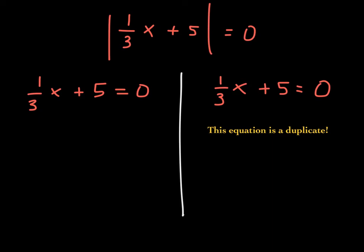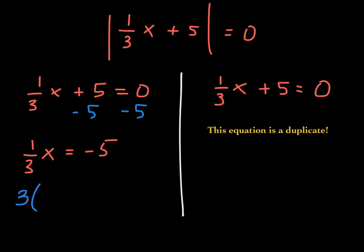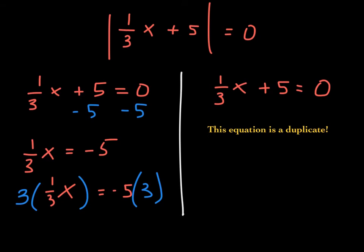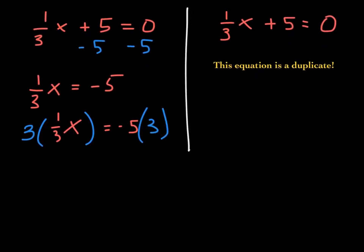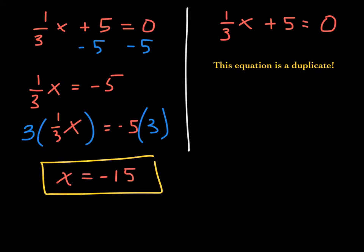Subtracting 5 from both sides gives 1/3 x equals negative 5. Multiplying both sides by the reciprocal of 1/3, which is 3, isolates x. The left side becomes simply x, and the right side gives x equals negative 15. That is your one and only answer.